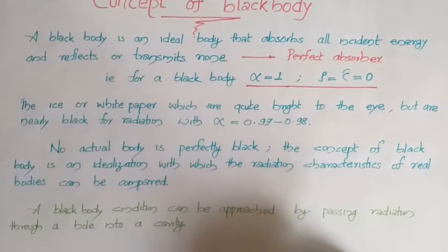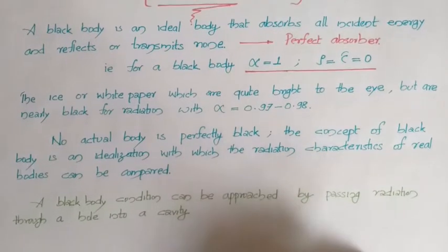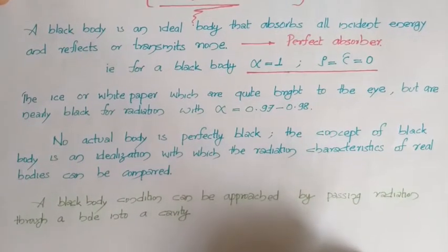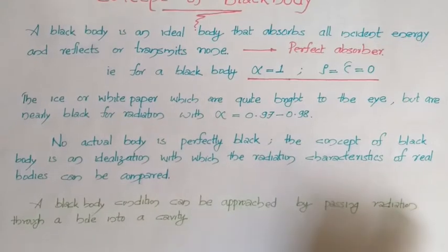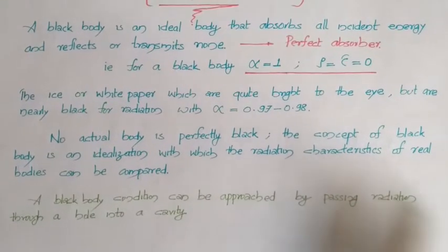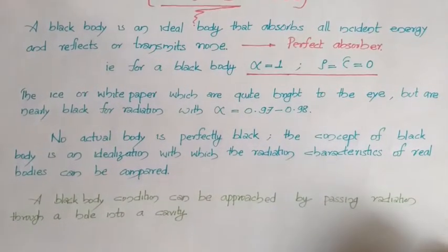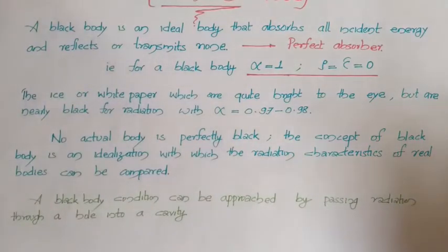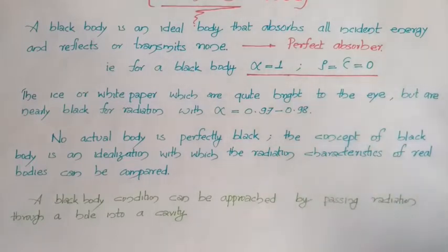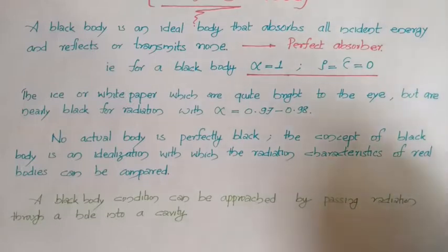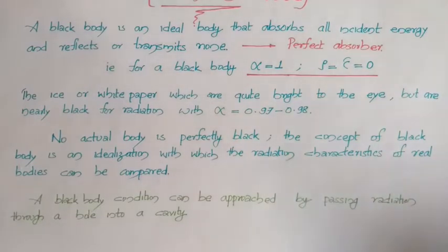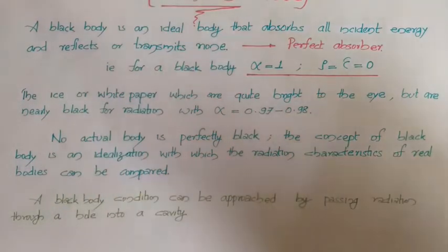No actual body is perfectly black, meaning no body can absorb all radiation. The concept of a black body is an idealization only, with which the radiation characteristics of real bodies can be compared. This is similar to the Carnot cycle — no air standard cycles have 100% efficiency, so you compare real cycles with the Carnot cycle. Similarly, you can compare real bodies with the black body.